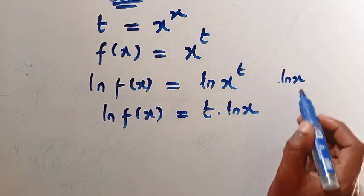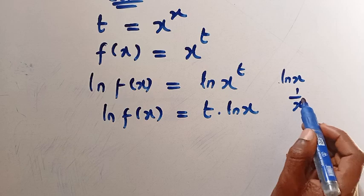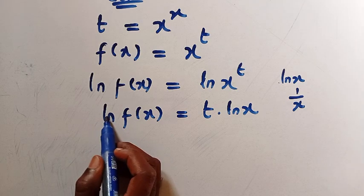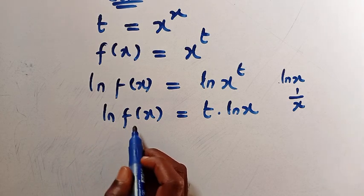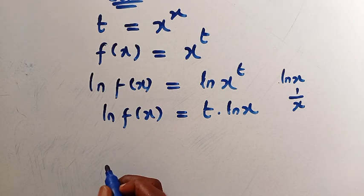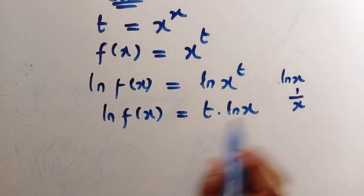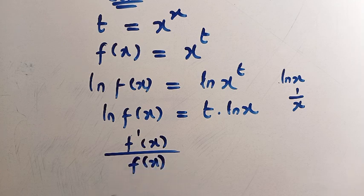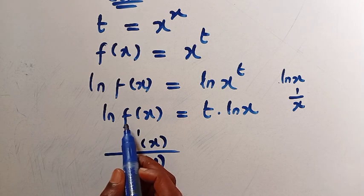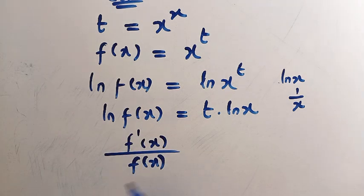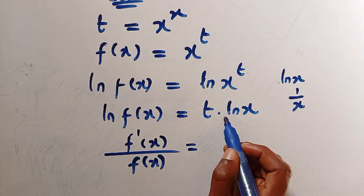Note that when we differentiate ln of x we get 1 divided by x, but this is a function on its own and we have a logarithm of another function. So this is a dependent variable, which means anytime we differentiate this we are adding another derivative. Since this comes as a fraction, we have f prime of x divided by f of x. We can call this a function within a function, so by using the chain rule we get what follows.